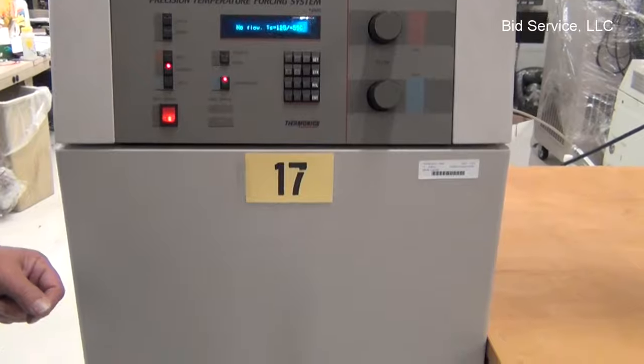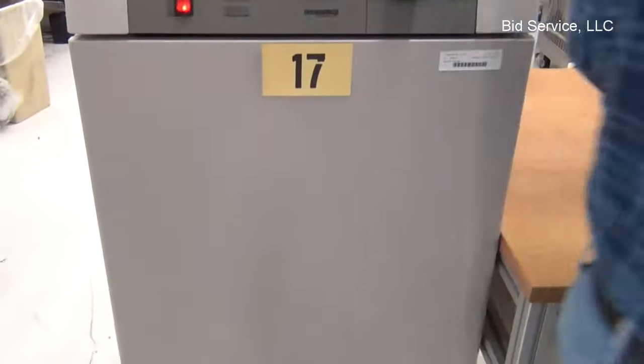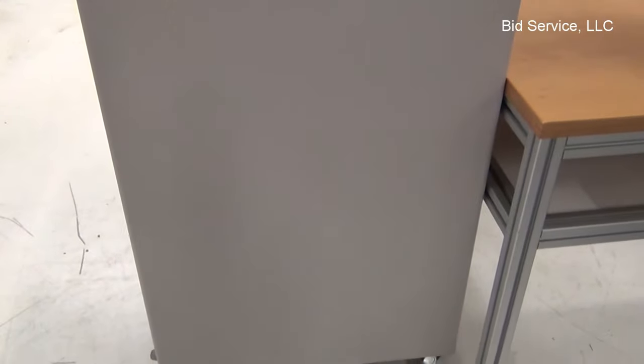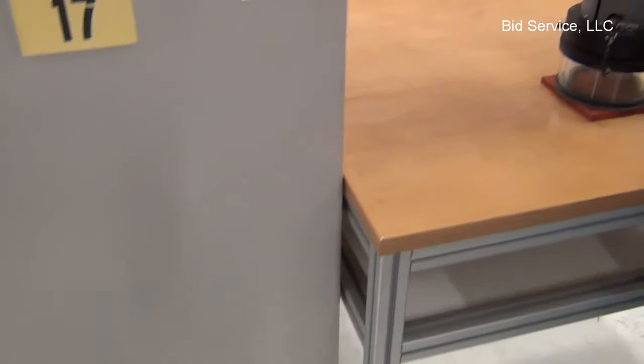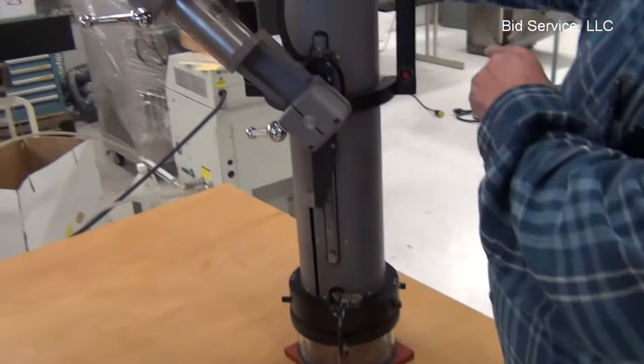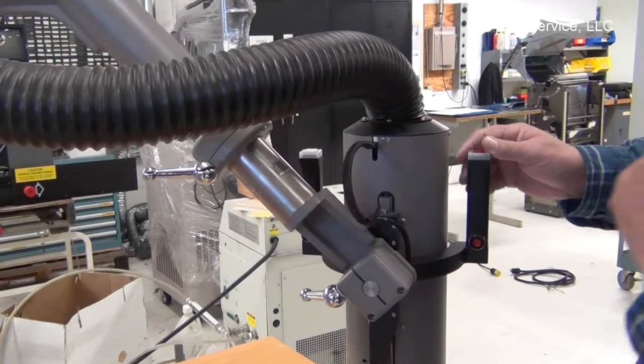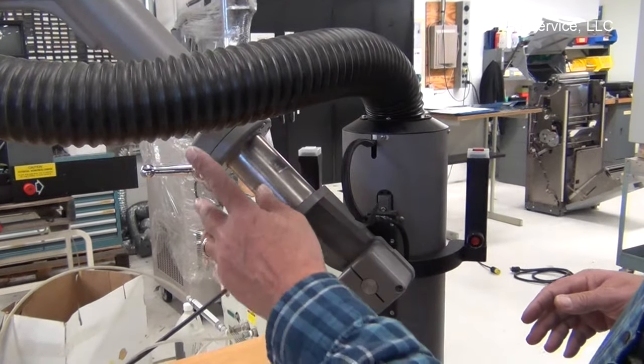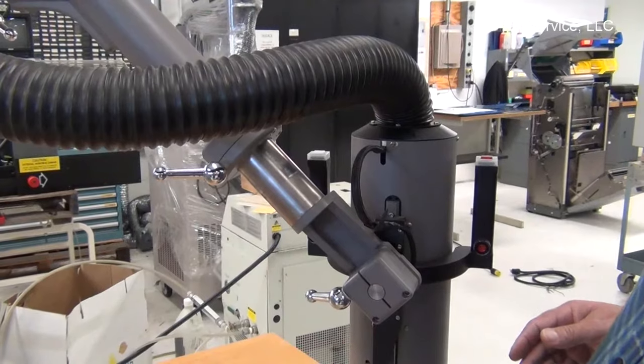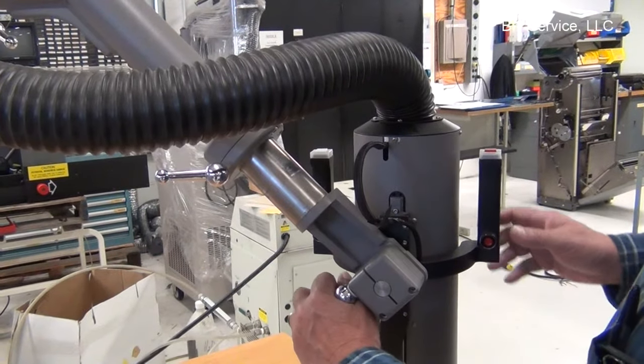So the boom controls are here. You have your boom up and your boom down here. There's also different joints that are on the arm. And those are compression locks.